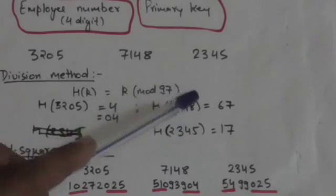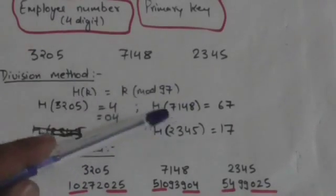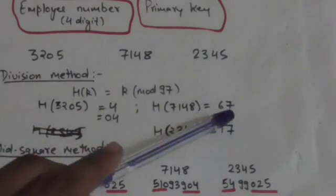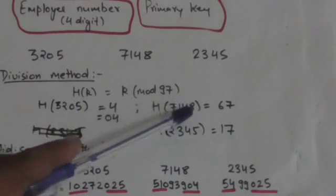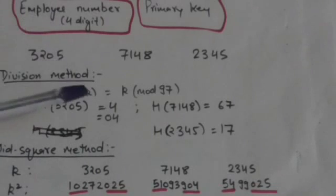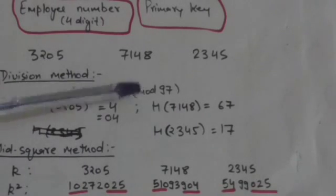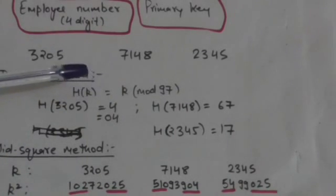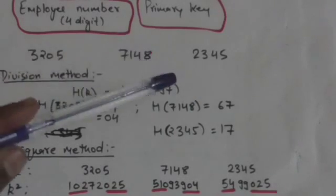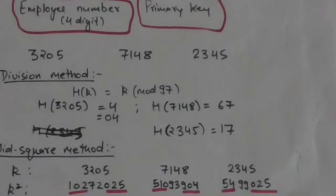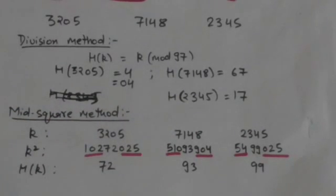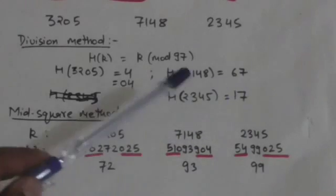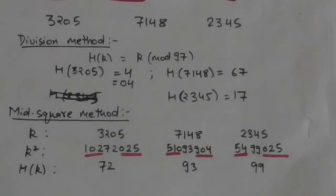When the hash function is applied on key 7148: 7148 divided by 97 gives remainder 67, so the hash value is 67. For key 2345: 2345 divided by 97 gives remainder 17, so the hash value of this key is 17.